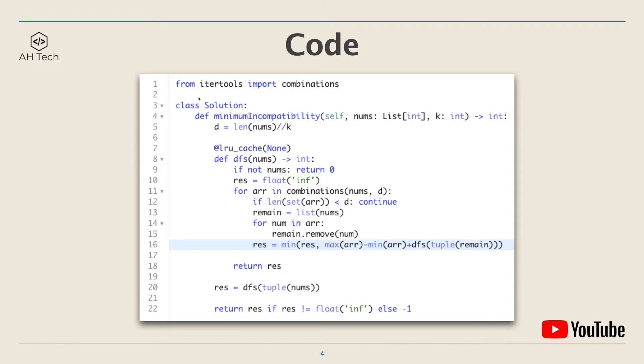Now let's look at the code. First, import the combinations function from the itertools library. Here d is the size of each subset. Then create a DFS function which will return an integer. This function will be cached by LRU caching. The base condition: if the input array is empty, return zero.